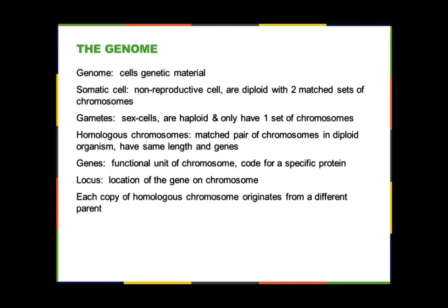Your homologous chromosomes are the matched pairs of chromosomes in the diploid organism. They have the same length and the same genes. Genes are the functional units of the chromosome — they are the instructions that code for making a specific protein. The locus is the location of the gene on the chromosome. Each copy of a homologous chromosome originates from a different parent.